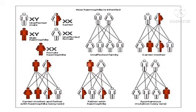If only the father is affected and the mother is normal, then the father will transmit the disease only to daughters, so daughters will become carriers. The mother gives her X chromosome to sons, so sons will be normal. In this scenario, all female children will be carriers and all sons will be normal.